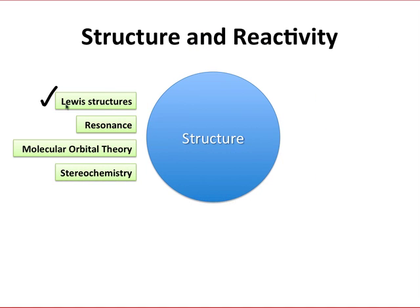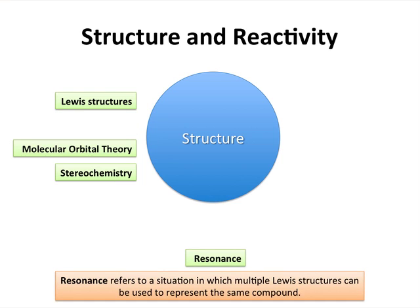So far we've discussed Lewis structures and molecular orbital theory as ways of thinking about the structure of organic molecules. Today we're going to bridge the gap between the two and look at resonance — the idea that a single compound or molecule can be represented by multiple Lewis structures that are in a sense equally valid representations of that molecule. At its simplest, resonance refers to a situation in which multiple Lewis structures can be used to represent the same compound.